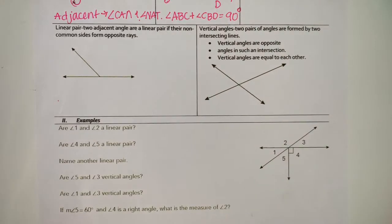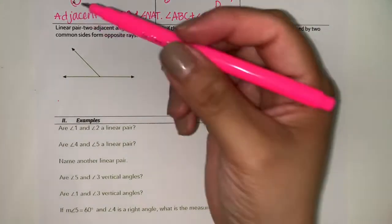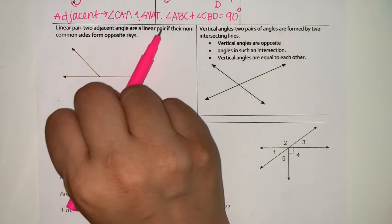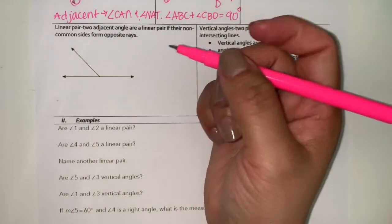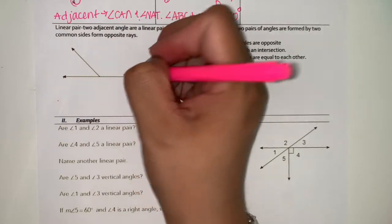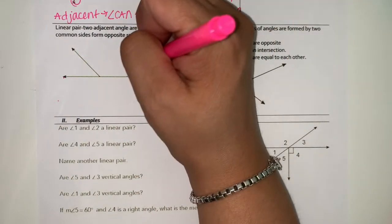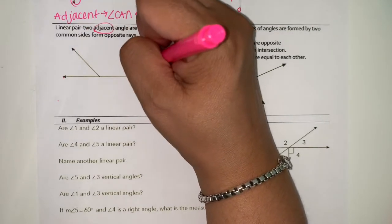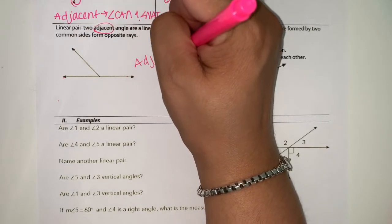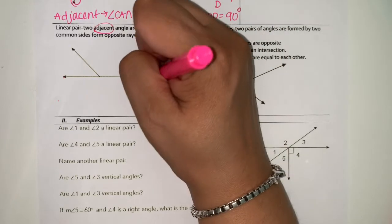We have a linear pair. Two adjacent angles are a linear pair if their non-common sides form opposite rays. So we have opposite rays on the non-common side. And remember adjacent, that's going to mean next to.